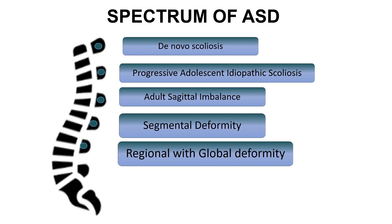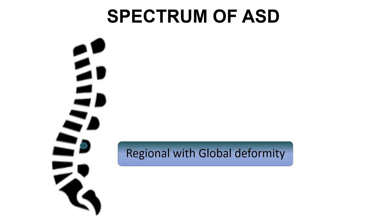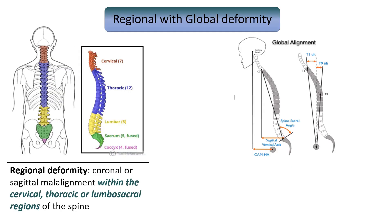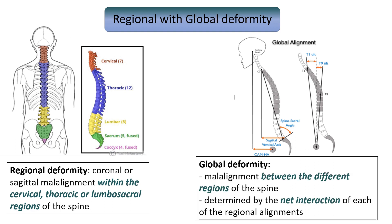In view of treatment considerations, it is crucial to consider regional and global patterns of scoliosis as well as sagittal and coronal imbalances. Malalignment may occur within regions of the spine, characterized by coronal or sagittal deformity within the cervical, thoracic, or lumbosacral regions. Global deformity results when there is malalignment between different regions of the spine, and global spinal alignment is determined by the net interaction of each of the regional alignments.